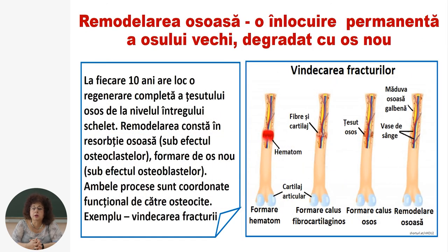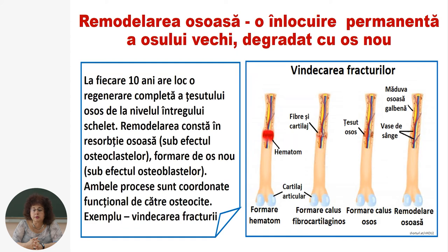Remodelarea osoasă este o înlocuire permanentă a osului vechi degradat cu un os nou. În fiecare 10 ani are loc regenerarea completă a țesutului osos de la nivelul întregului schelet. Remodelarea osoasă constă în resorbție osoasă sub efectul osteoclastelor și formarea de os nou sub efectul osteoblastelor. Ambele procese sunt coordonate funcțional de către osteocite.